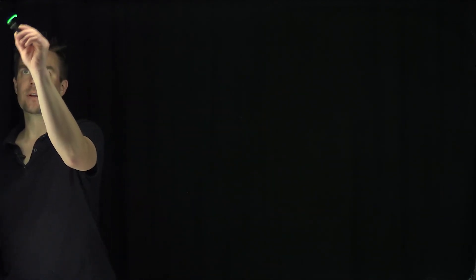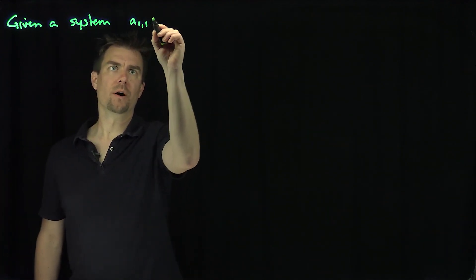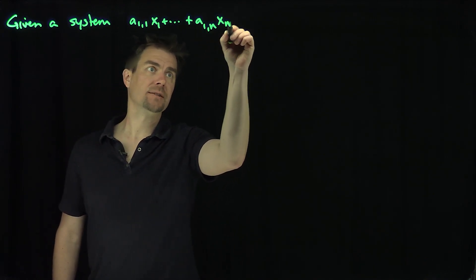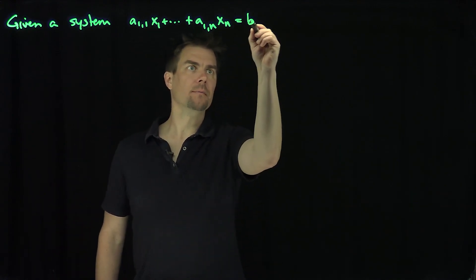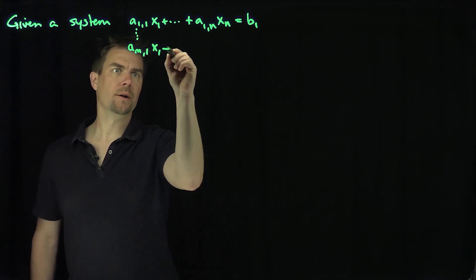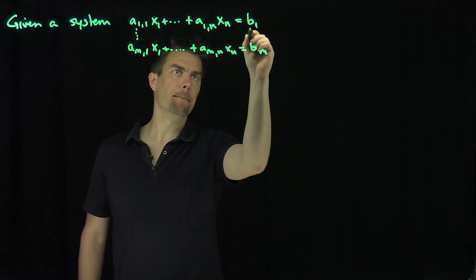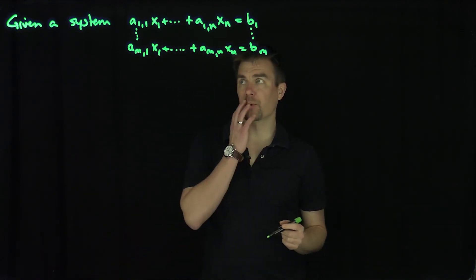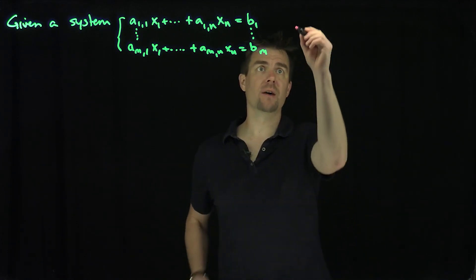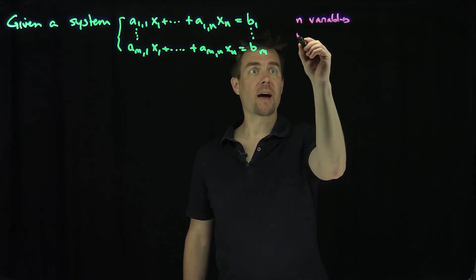Let's suppose we're given a system: a11·x1 all the way down to a1n·xn equals b1, all the way down to am1·x1 plus amn·xn equals bm. We have x1 through xn, so we have n variables in our problem, and we have b1, b2, b3, and we have m equations.